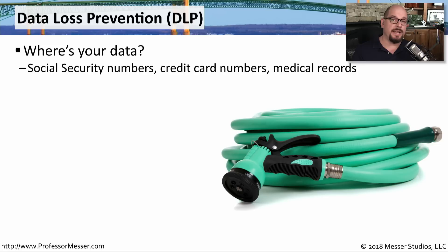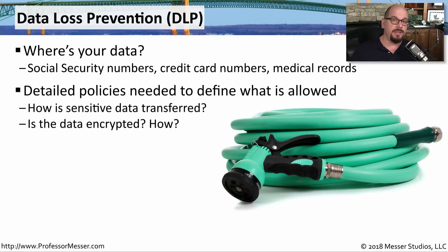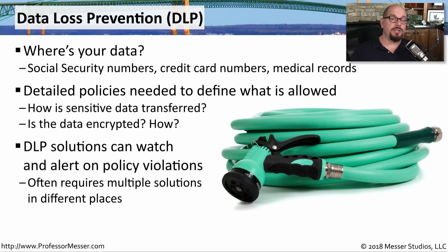Every organization needs to have a formal set of policies and procedures related to DLP, or data loss prevention. These will be policies that dictate how your organization handles social security numbers, credit card numbers, or any other type of personally identifiable information. For example, if you're an organization that works with medical data, you need to understand exactly how that sensitive information may be transferred across your network, and whether encryption is used. Many organizations will also deploy data loss prevention technologies on their servers and networks to watch for this data going across the network, which helps validate that policies are being followed — and can block information before it gets into the wrong hands.